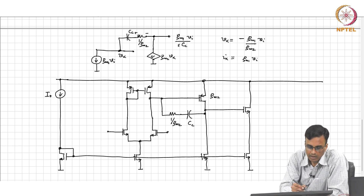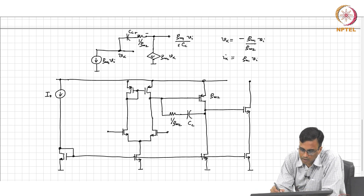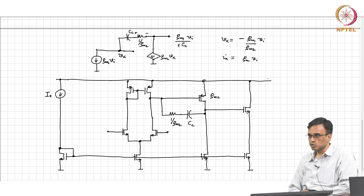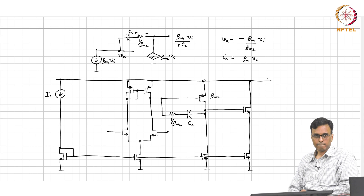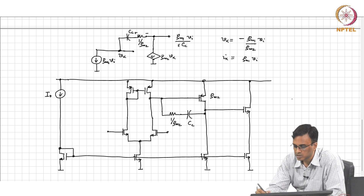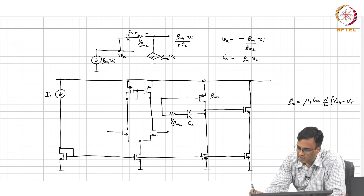Remember one thing — what comment can we make about the transconductance of a transistor operating in saturation and its resistance when operated in the triode region? If you take a transistor and operate it in saturation, the transconductance GM is nothing but mu_p C_ox (W/L) times (V_SG minus V_T).